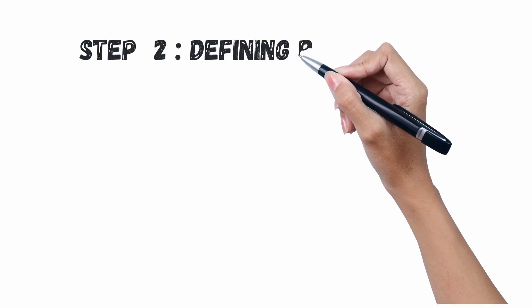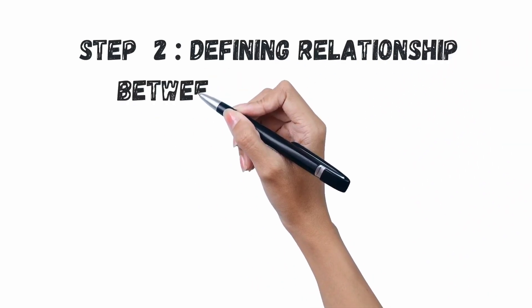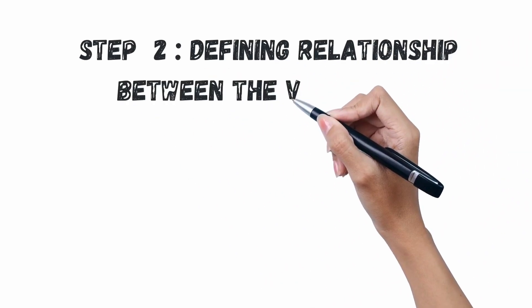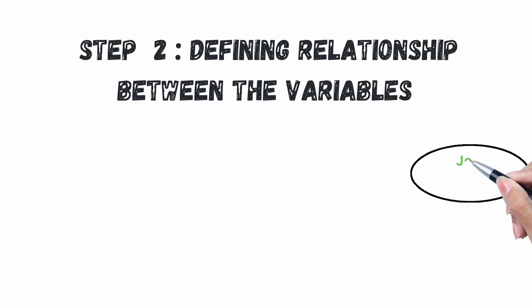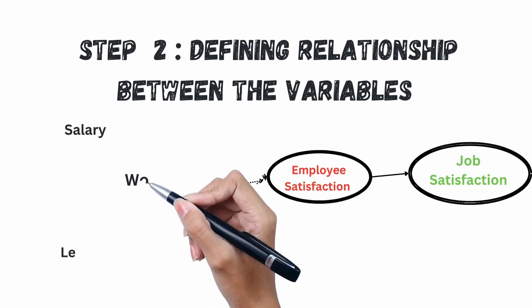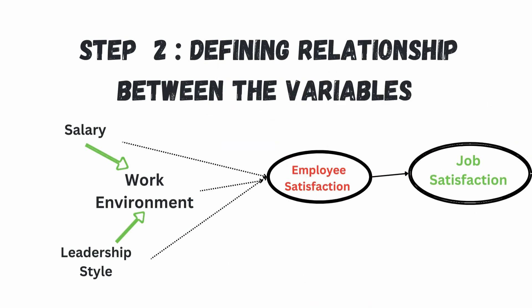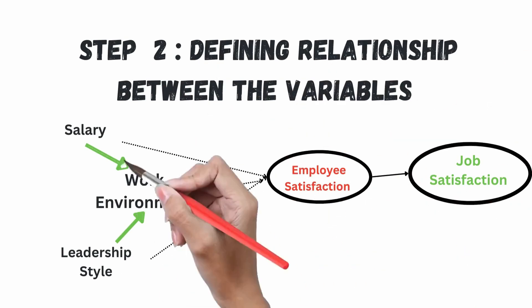For example, a study may show that a positive salary can result in a positive work environment — that is one relationship. Also, a positive leadership style could result in a positive work environment — that is another relationship. This is how we connect the different variables, which is your step two.